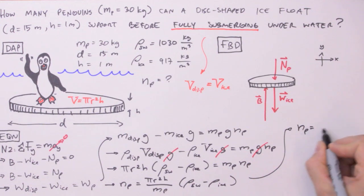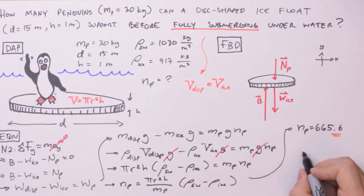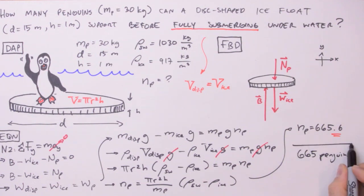And when we do, we get 665.6 penguins. Now, I don't know about you, but I've never seen six-tenths of a penguin walking around. But the question is actually asking how many penguins will it support before submerging? The answer to that is 665 penguins because a 666th penguin, besides being bad luck, would cause the float to sink.